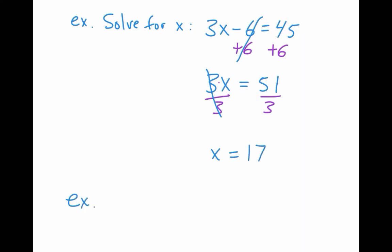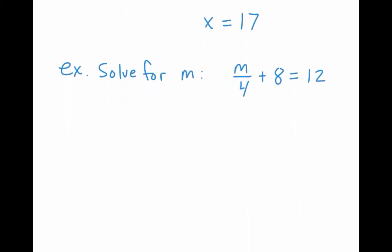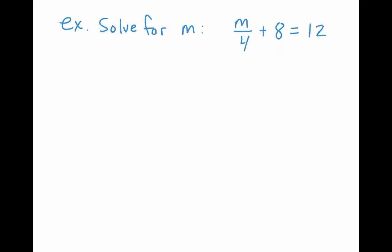Second example. I'm going to say solve for m. Throw a different letter in there just to get you used to it. And my equation is going to be m divided by 4 plus 8 equals 12. So we're going to start by moving the 8. It's connected by addition. We have to undo, so we're going to subtract 8 from both sides. So they added 8, we do the inverse of addition, we subtract. Then my plus 8 and minus 8 will cancel, leaving me m over 4 equals 4.